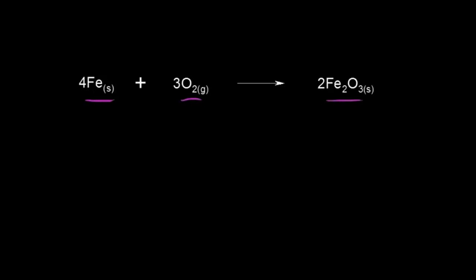Let's assign some oxidation states. Let's ignore the coefficients — they're just for balancing chemical reactions. If we think about those iron atoms as being in their elemental state, the oxidation state of those atoms is equal to zero. Moving over to oxygen gas, the atoms in the O₂ molecule are also in their elemental state, so they have an oxidation state equal to zero.